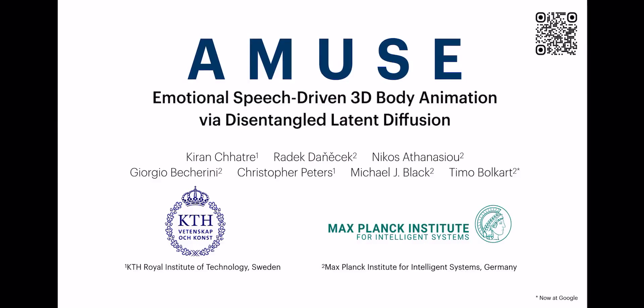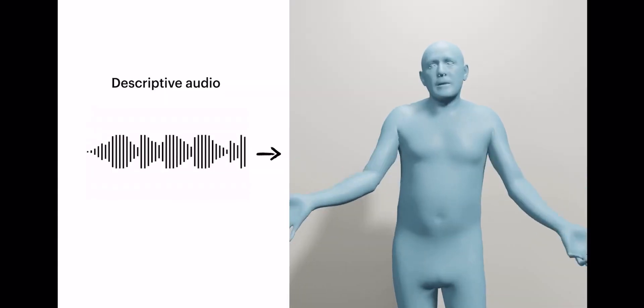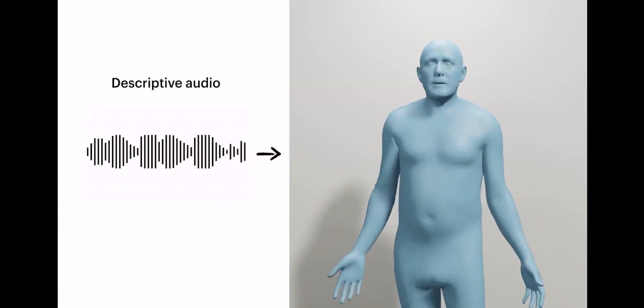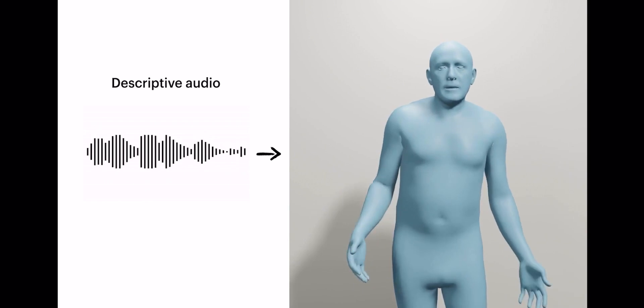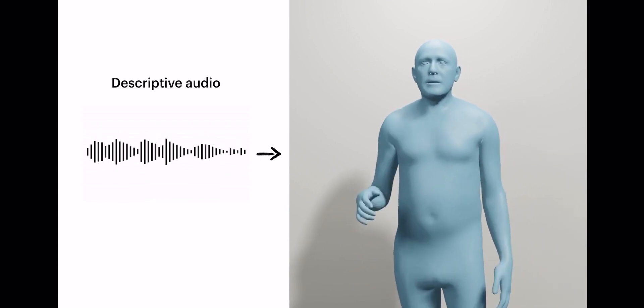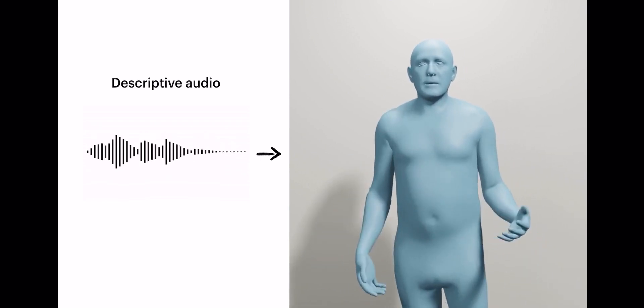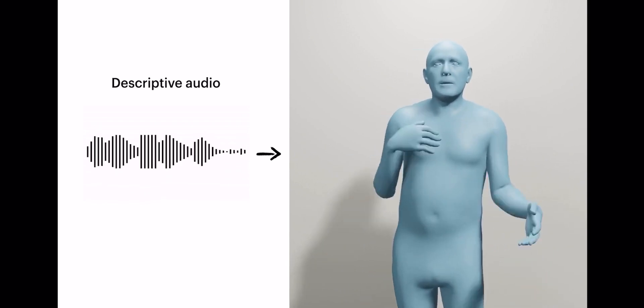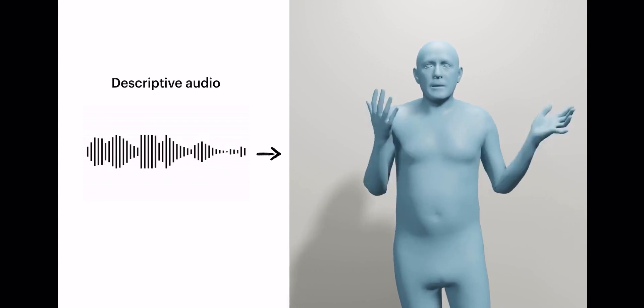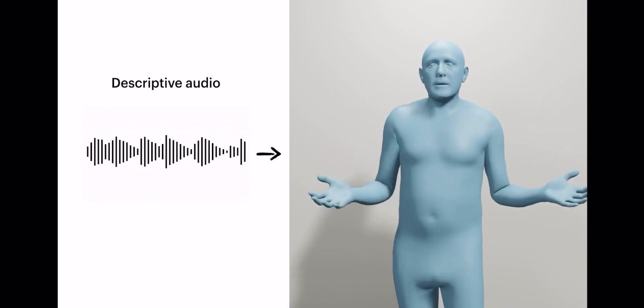We present Amuse, a framework to generate realistic emotional 3D body gestures directly from speech sequences with user control over the generated emotion.